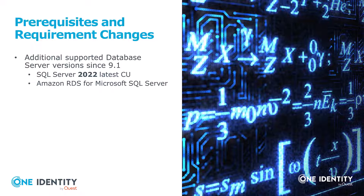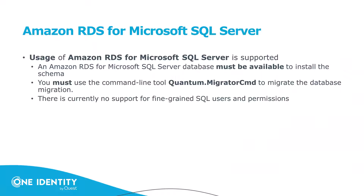First, let's talk about the prerequisites necessary for the Identity Manager, starting with the supported SQL Server versions. SQL Server 2022 latest CU is supported since version 9.1, and additionally since 9.1 the Amazon RDS for Microsoft SQL Server is supported as well. One thing to know about Amazon RDS for Microsoft SQL Server is that the permission model is not supported — you will not have the fine-granular permissions from RDS.